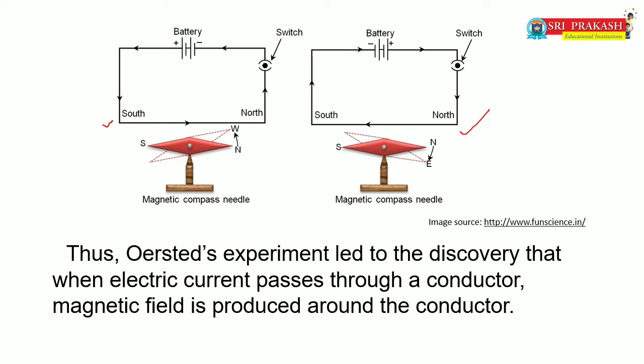According to Oersted's discovery, a current-carrying conductor is able to deflect a magnetic needle. Normally, a magnetic needle experiences force due to another magnet, but here no magnet is present. So he concluded that a current-carrying conductor produces a magnetic field. Later, Biot and Savart studied current-carrying conductors and designed equations for different shaped conductors — Biot-Savart's Law. Thus, Oersted's experiment led to the discovery that when electric current passes through a conductor, a magnetic field is produced around the conductor.